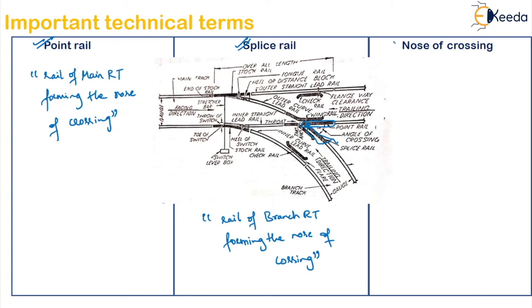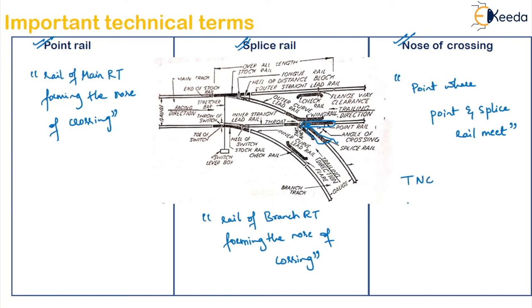Next is the nose of crossing — the point where the point rail and splice rail meet is the nose of crossing. The nose formed by joining the running face of the point rail and the splice rail is called the true or theoretical nose of crossing. The nose actually provided is known as the actual or blunt nose of crossing. Normally 6 to 18 mm more is provided, which is why theoretical and actual are different.